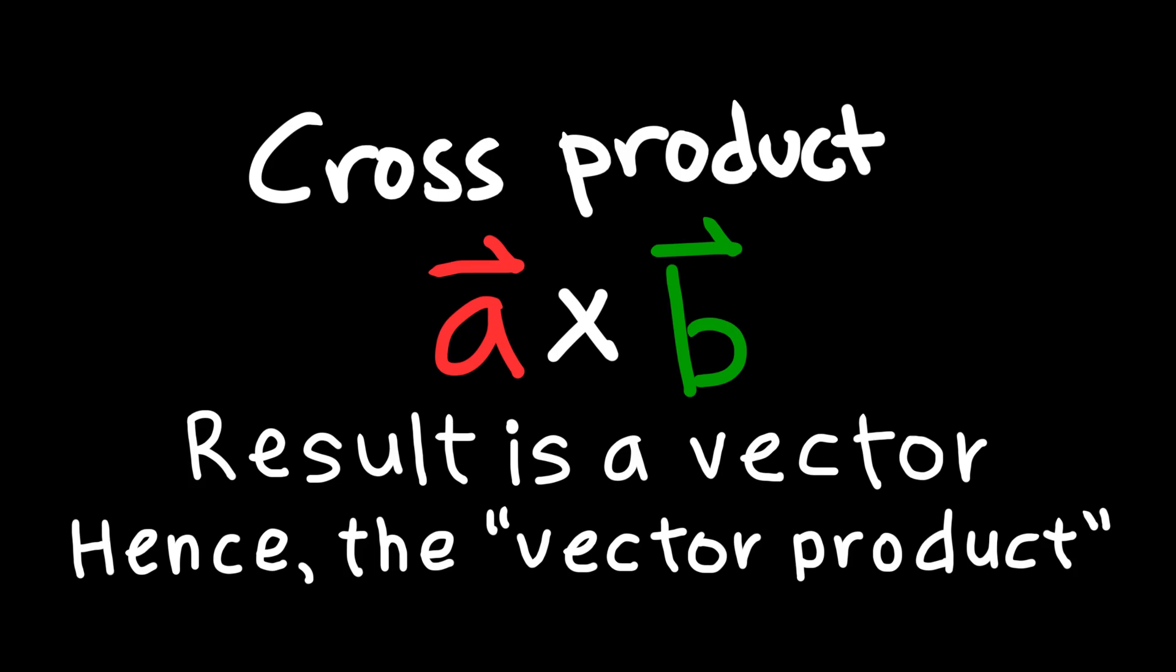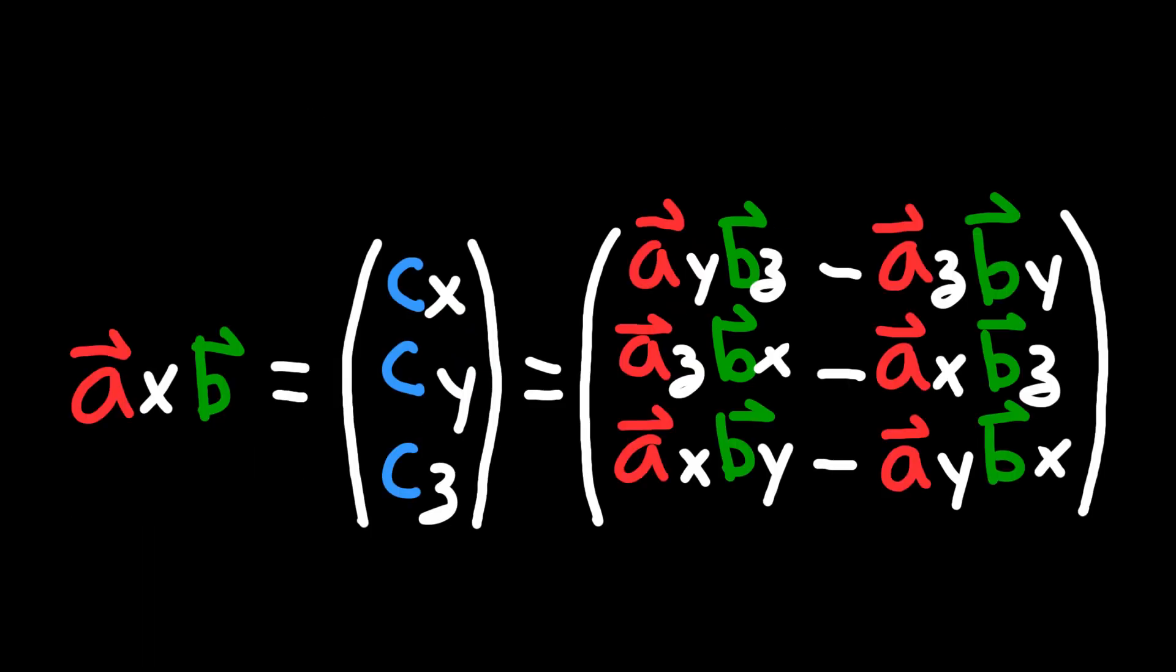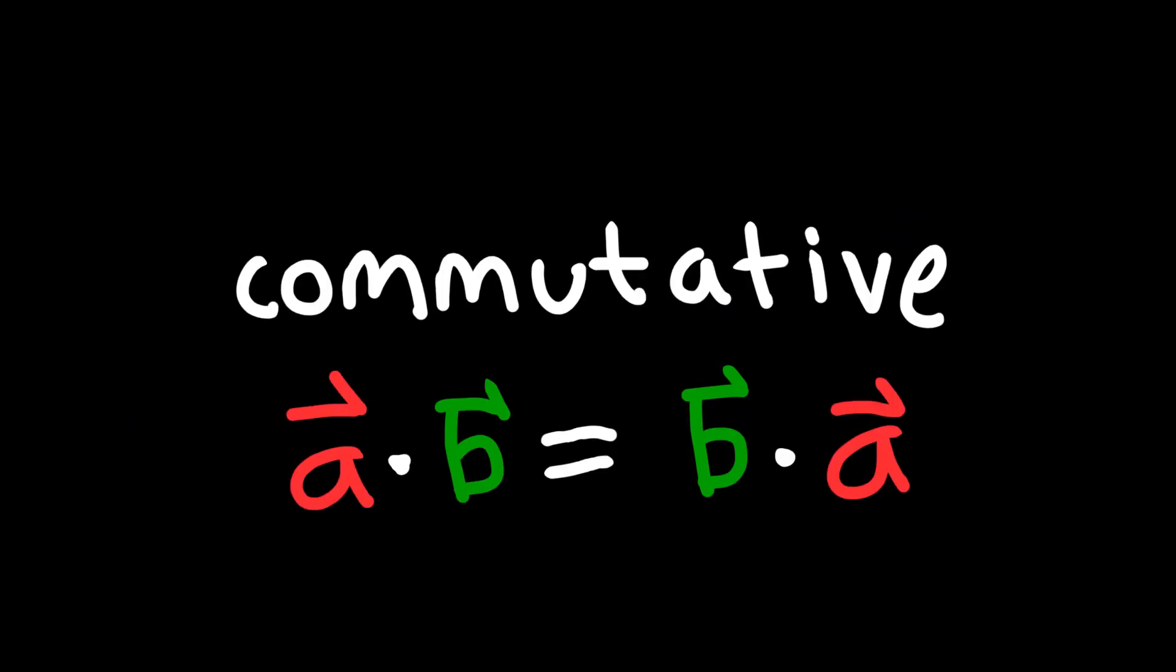Another consequence of this, and you may notice this if you look carefully at the mathematical definition of the cross product, the cross product is a function which is not commutative. If you have, for example, two vectors, let's call them A and B, and you take the dot product of A against B, and you compare that to the dot product of B against A, you're going to find that the result of the two calculations is exactly the same.